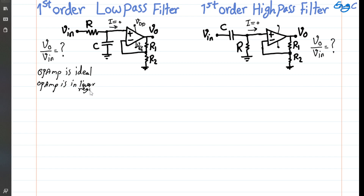With these two assumptions in mind — ideal op-amp operating in negative feedback — we can assume that V-positive and the voltage at the negative input terminal of the op-amp are equal. This is referred to as the virtual short, and it holds at the op-amp input. Let's call this equation number one.